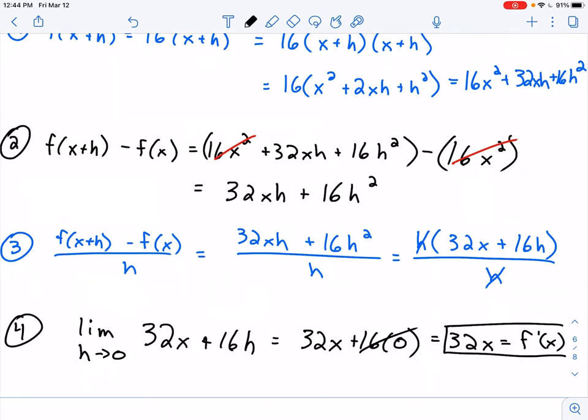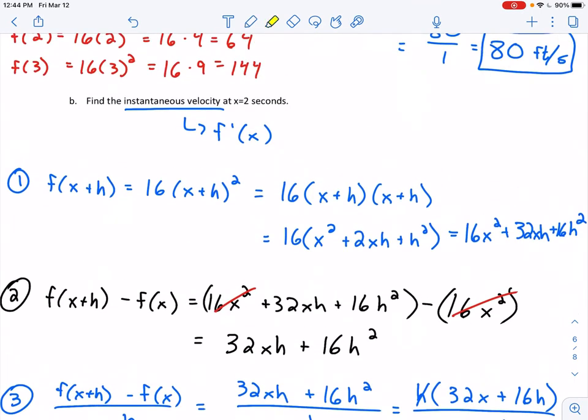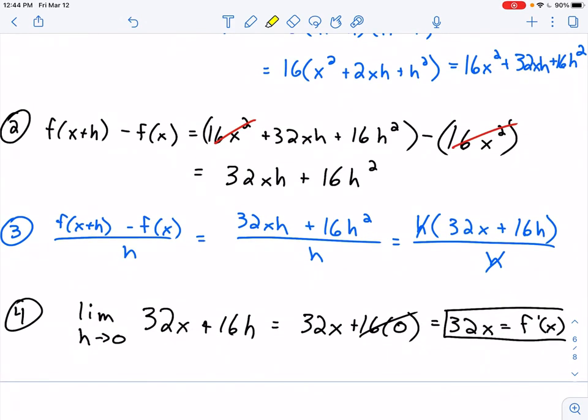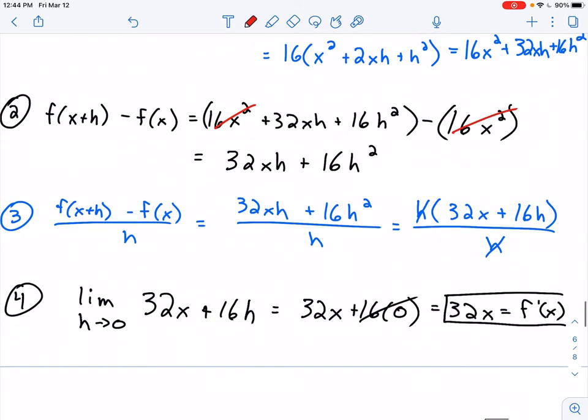We found the derivative, which is 32x. Now we want the instantaneous velocity at x=2 seconds. I'll take x=2 and plug it into the derivative. f'(2) equals 32 times 2, which gives me 64. I want to include a unit here as well. Our unit is feet per second, so the instantaneous velocity is 64 feet per second.